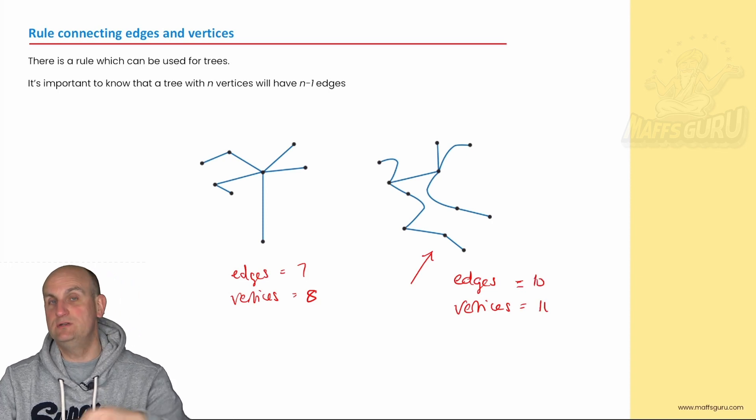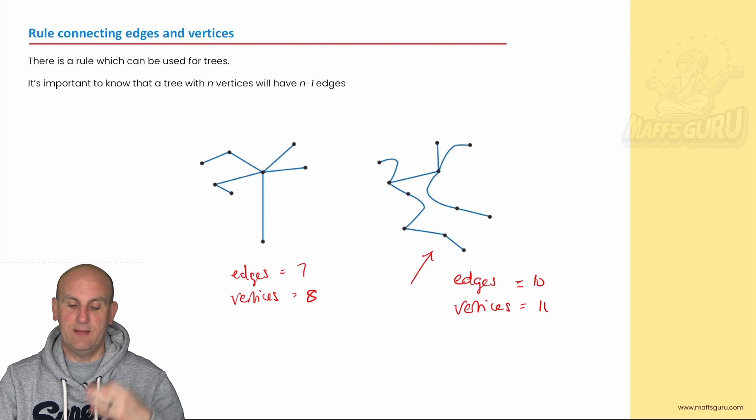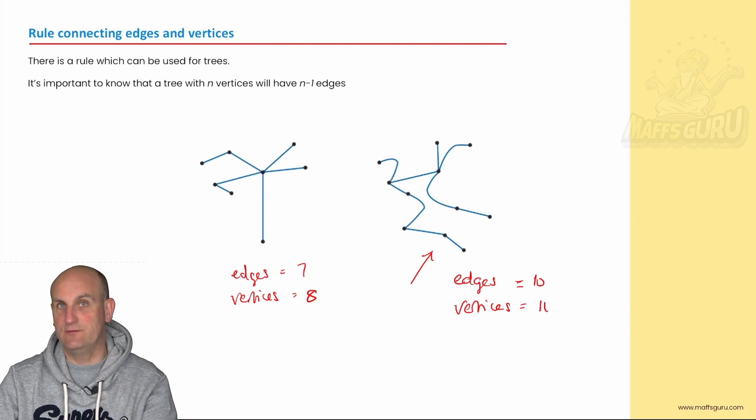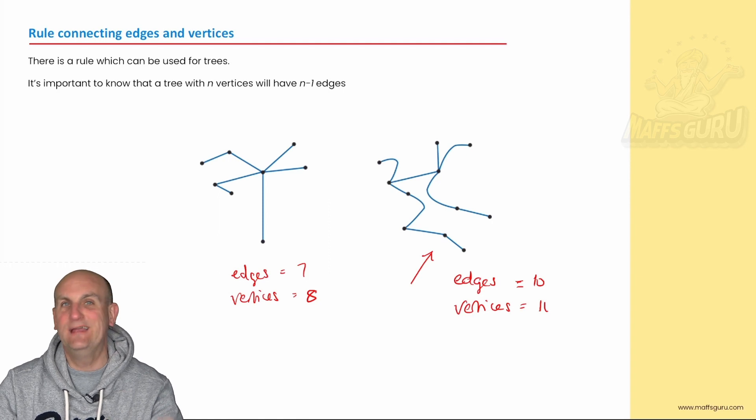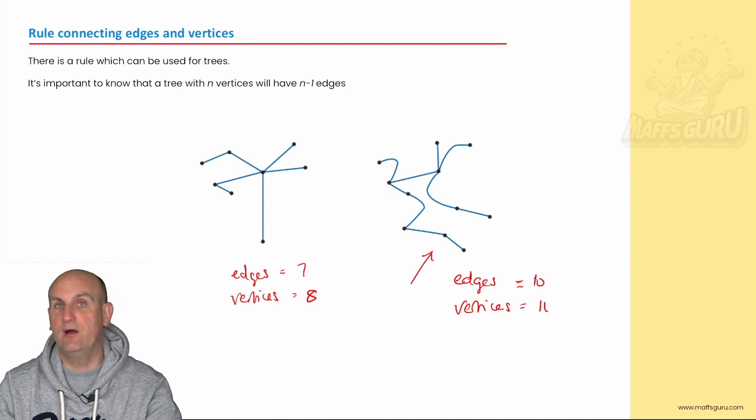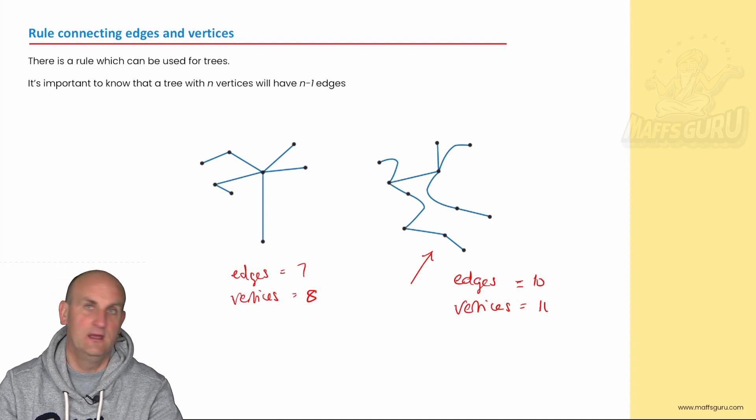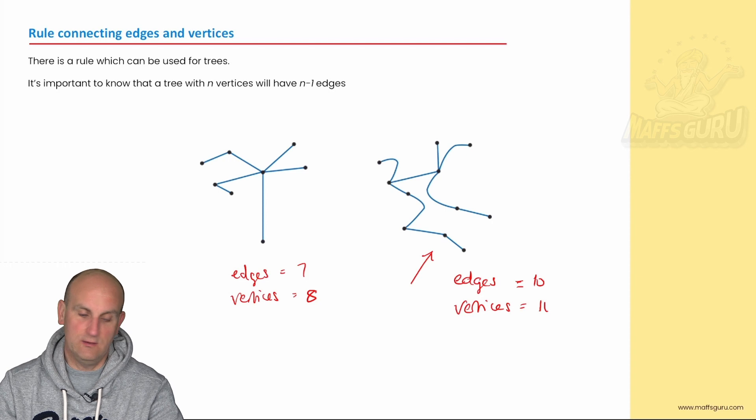Now I could keep doing this with trees, but what we can tell is that a tree is basically where the number of edges is one less than the number of vertices. And again, exam questions can ask you that. If there are eight vertices in a graph, how many edges would it have for it to be a tree? Well, eight minus one is seven.